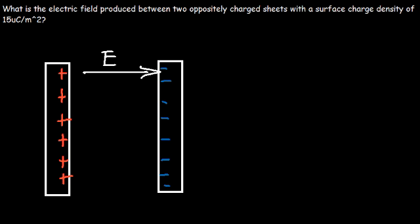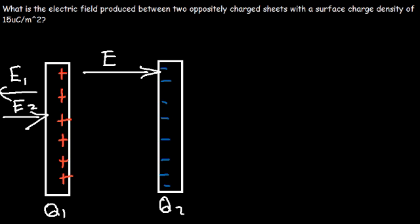What is the electric field outside of the plates? The electric field produced by Q1 on the left side is directed towards the left, away from the positive charge. The electric field produced by the negatively charged plate is directed towards it. So the electric field outside of the plates basically cancels — it's almost zero, and therefore negligible. If these plates are sufficiently large, the distance doesn't matter, as we've seen with an infinite sheet of charge.